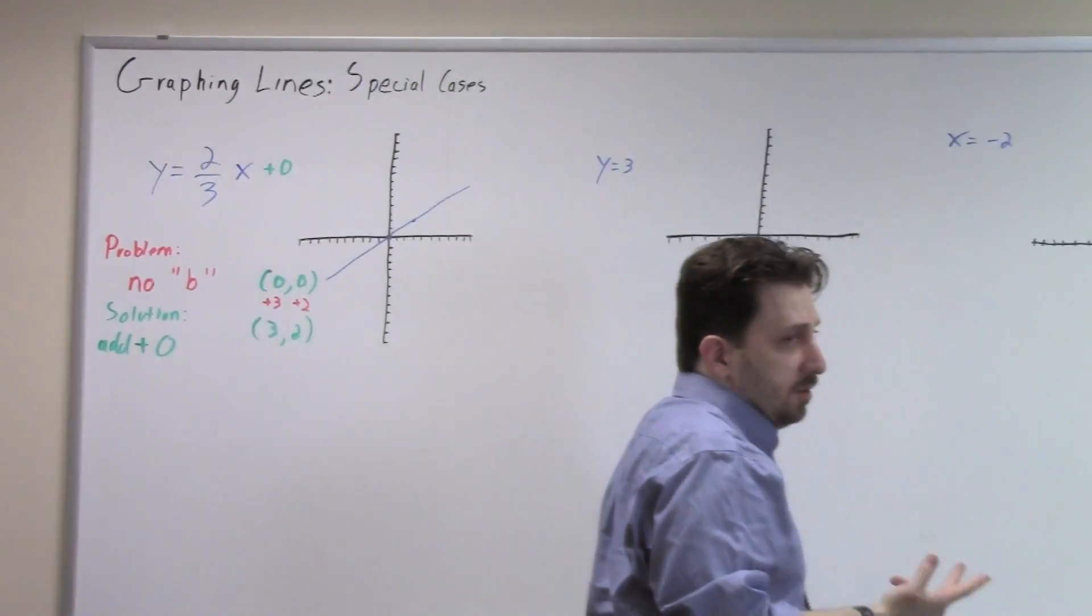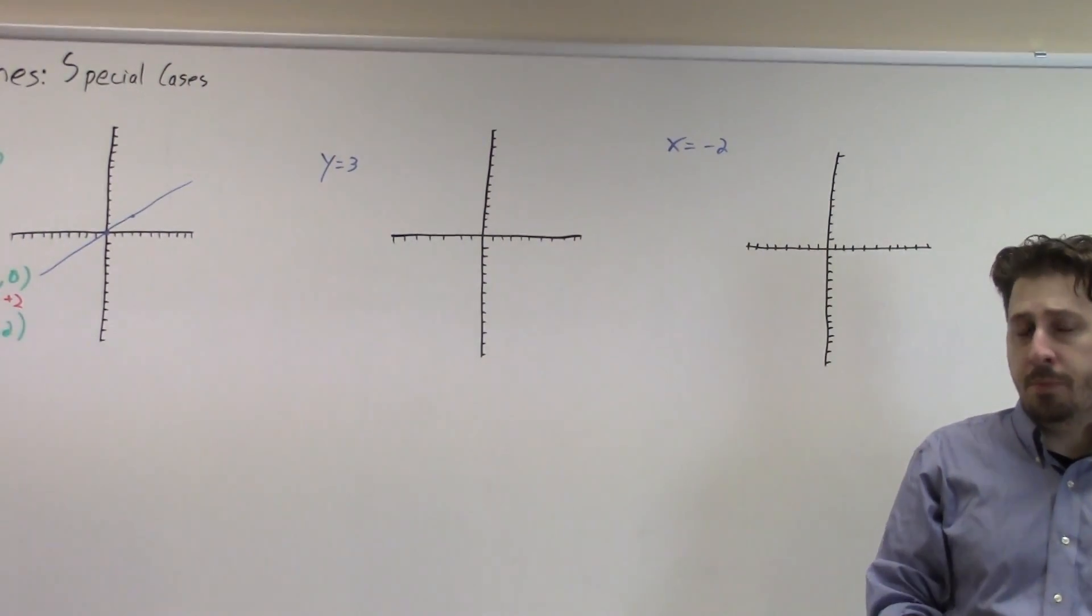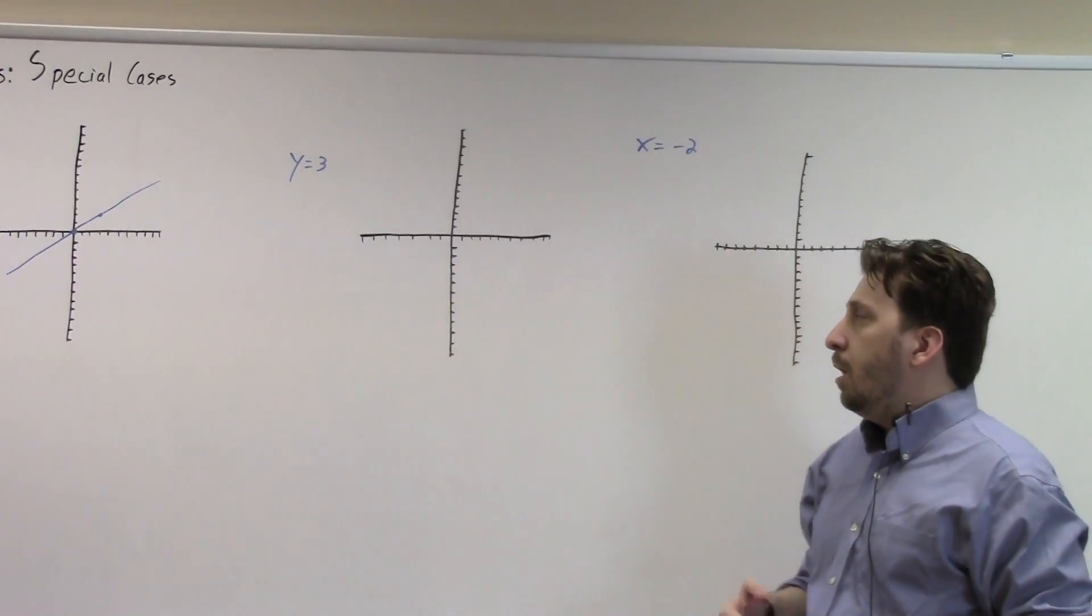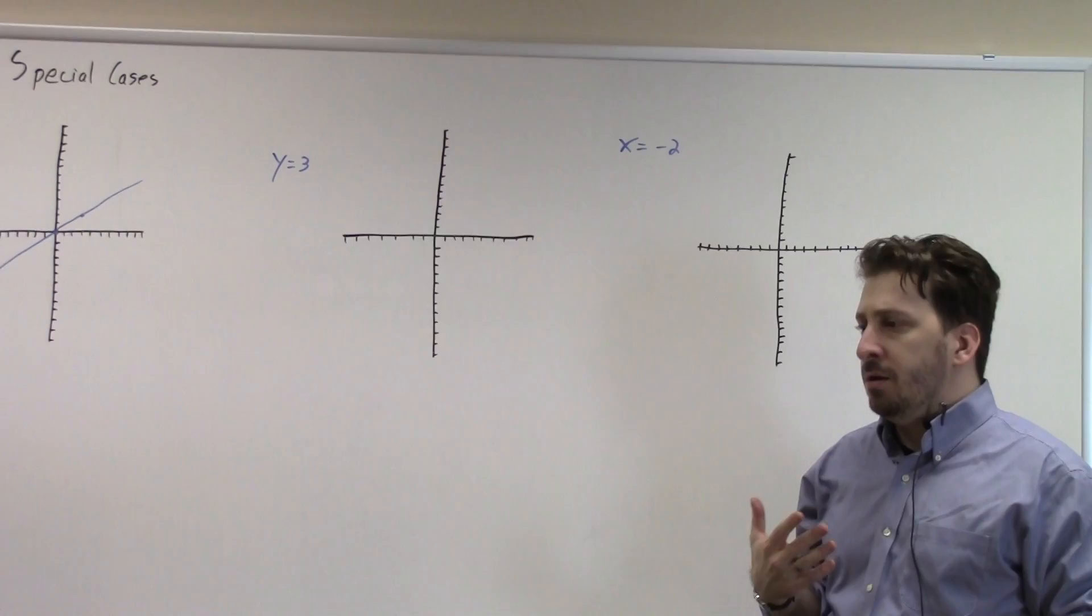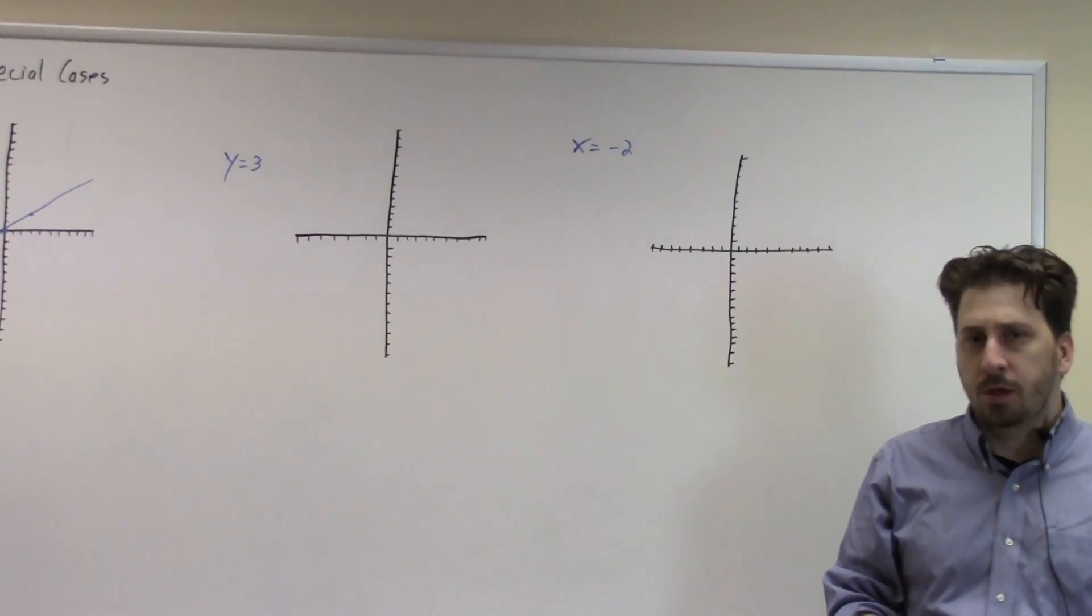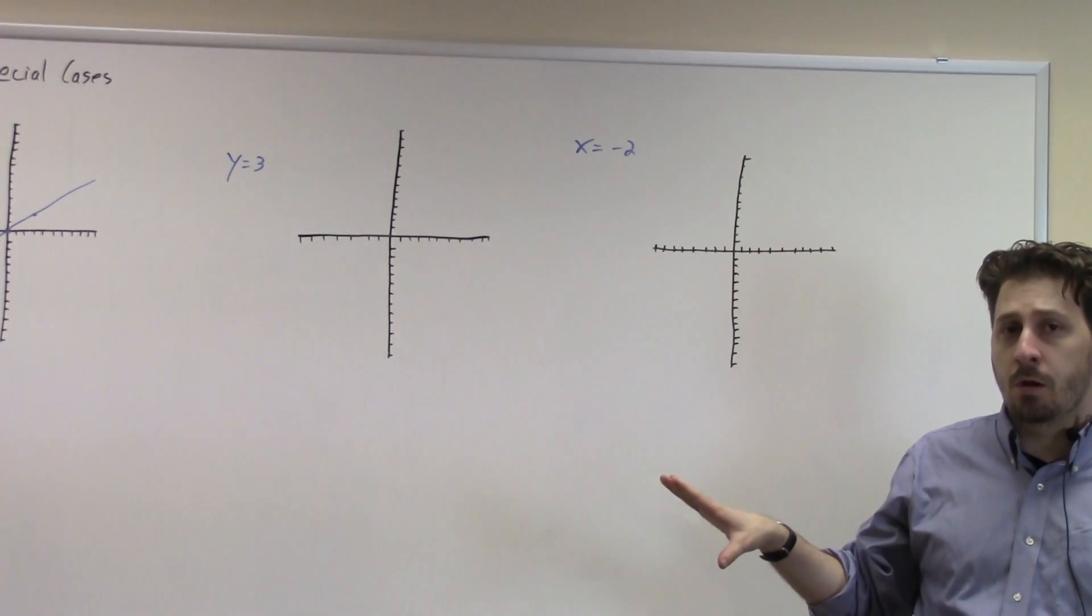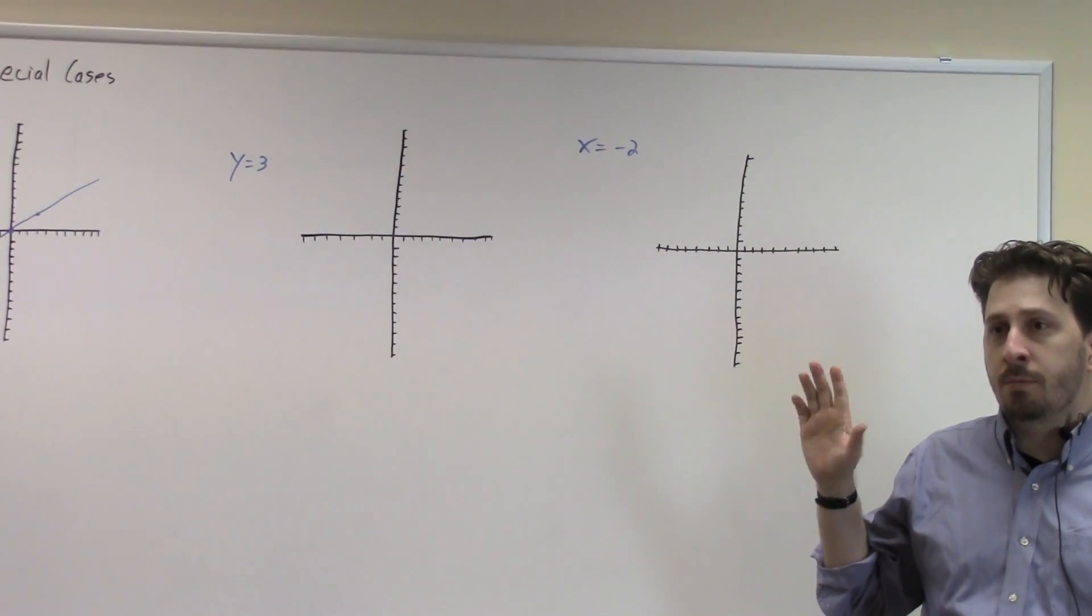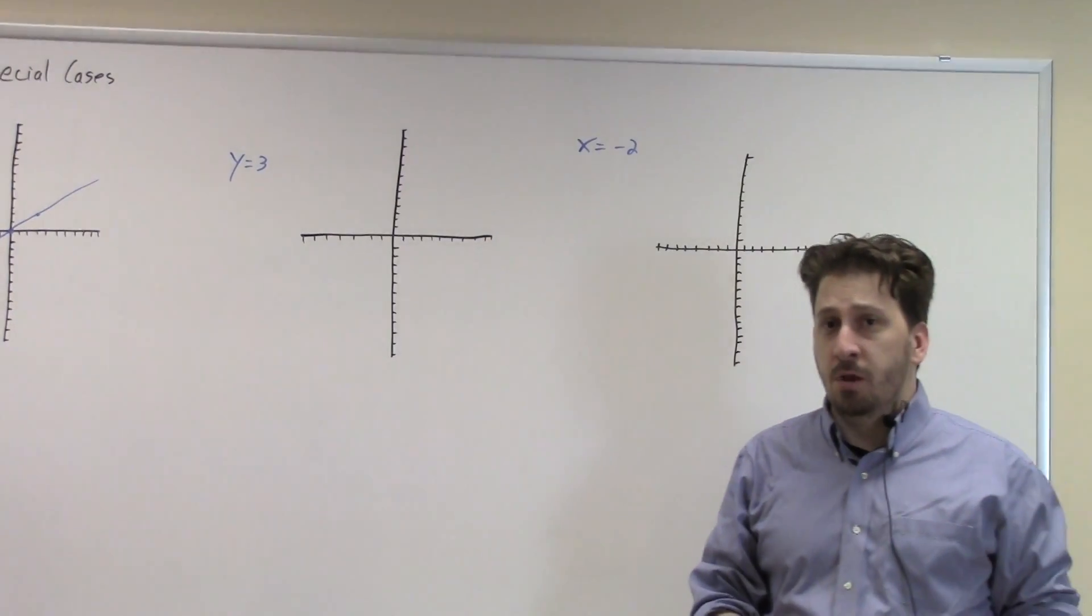Now, the next two special cases require a little bit more thought, but they're not bad. A lot of students try to remember that this one's horizontal and this one's vertical. I say, don't worry about that. Come up with two points. If you follow what I'm doing here and just come up with two points, you won't have to worry about getting confused between your vertical and horizontal, which I've seen happen a lot of times.